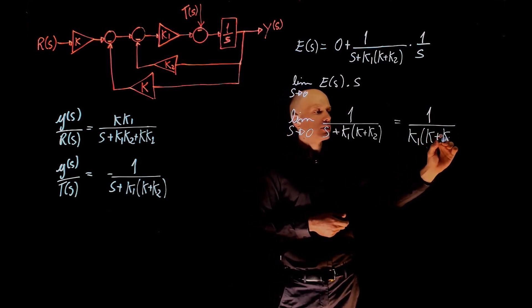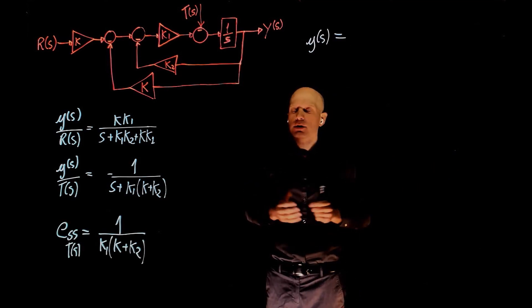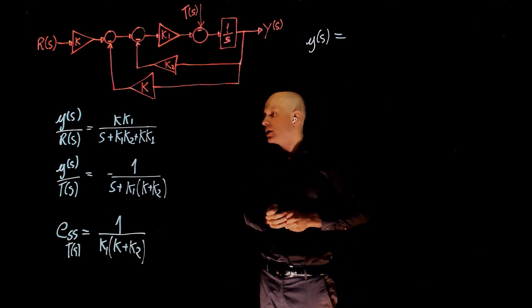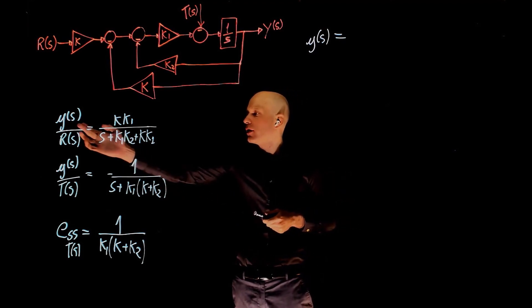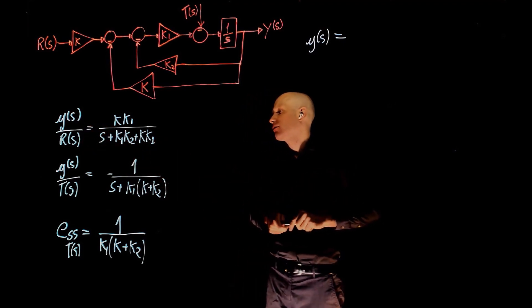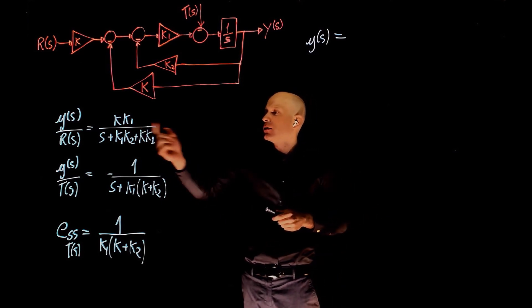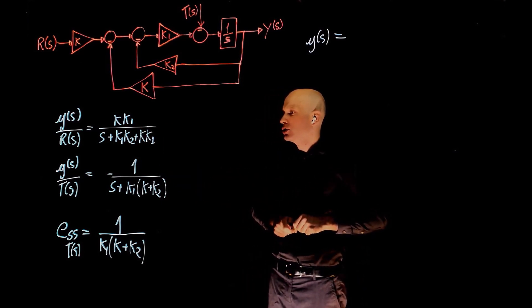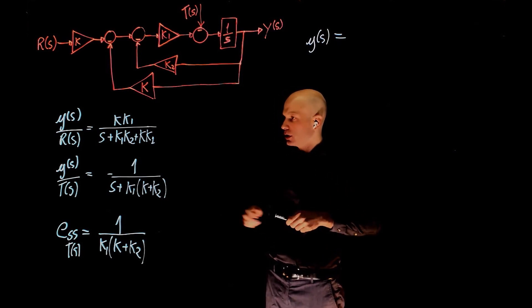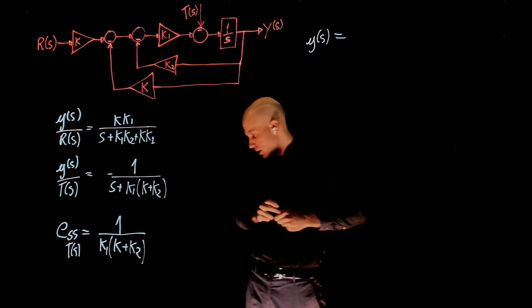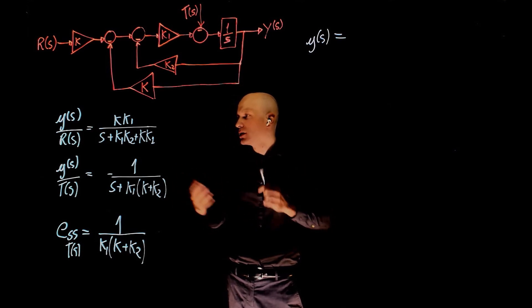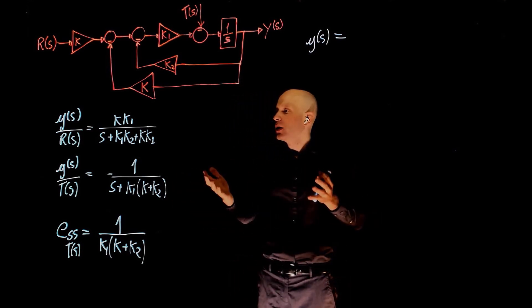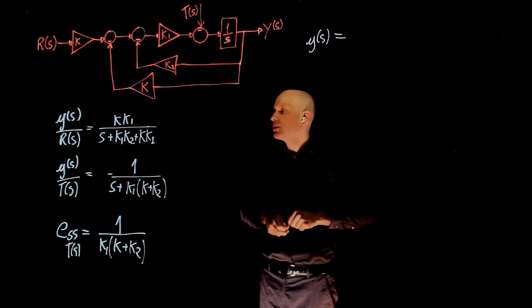The last part of this problem is to set k and k2 to 1 and find the temporal response of y of t for a step input of r of s, and then select the value of k1 such that we have the fastest response. We know that the upper limit is 10. After 10, the system may get unstable. We know that k1 for some hardware limitation needs to be between 1 and 10.